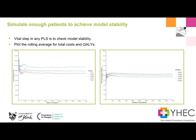Finally, the biggest step is obviously to make sure that your model is stable - by which I mean, make sure that enough patients have been simulated so that when you repeat the simulation for the number of patients in your cohort, you're not getting results that are bouncing around. We can see here in this example I've just done 5,000, and we can see the rolling average for the total costs and qualities - they start stabilizing to a flat line.